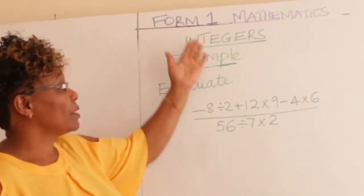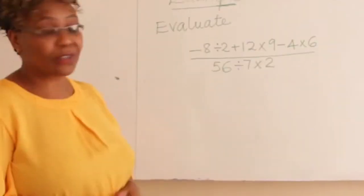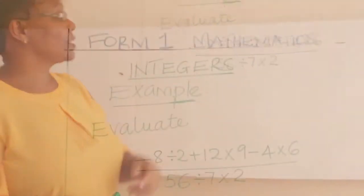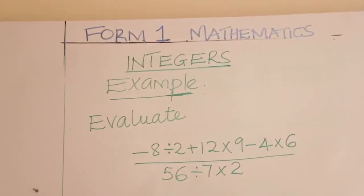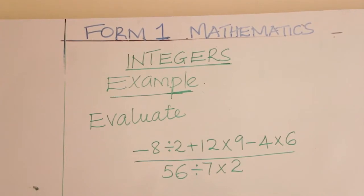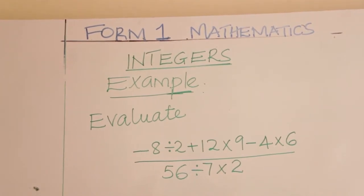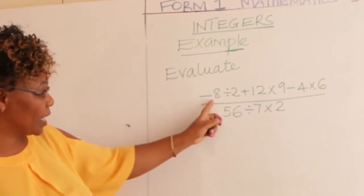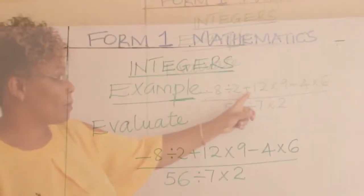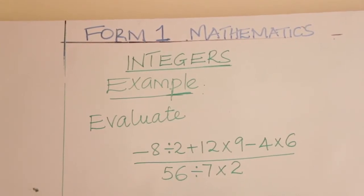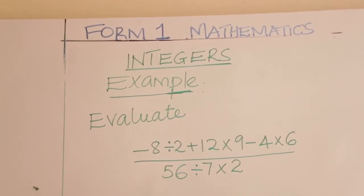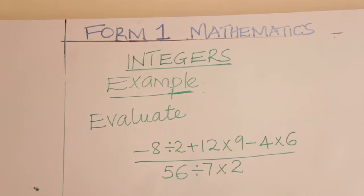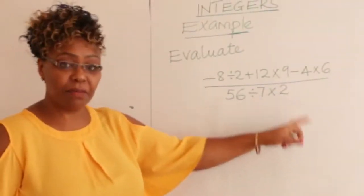Welcome to Formal Mathematics. We are going to look at integers, and we look at an example here on integers. Suppose you are told to evaluate negative 8 divided by 2, plus 12 times 9, minus 4 times 6, all divided by 56 divided by 7 times 2.